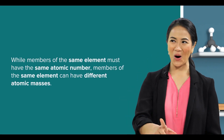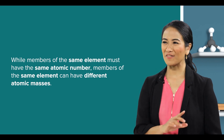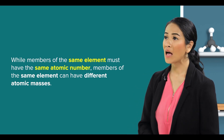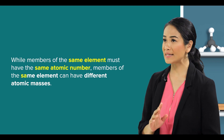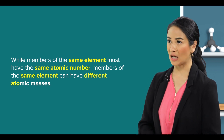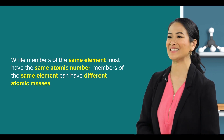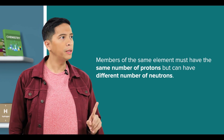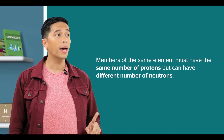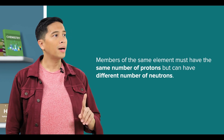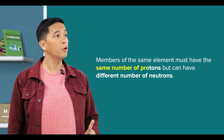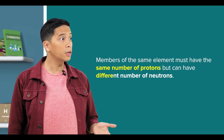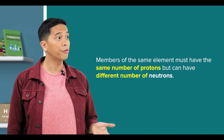So while members of the same element must have the same atomic number, members of the same element can have different atomic masses. That simply means that members of the same element must have the same number of protons but can have different numbers of neutrons.